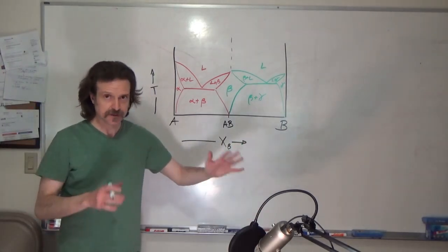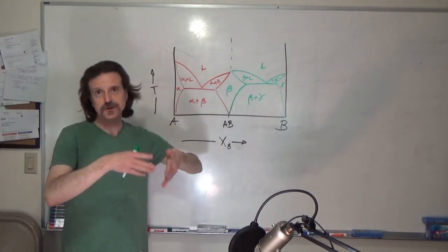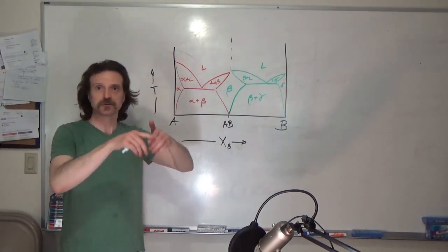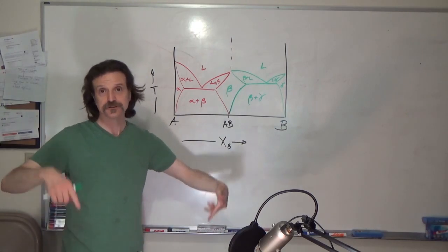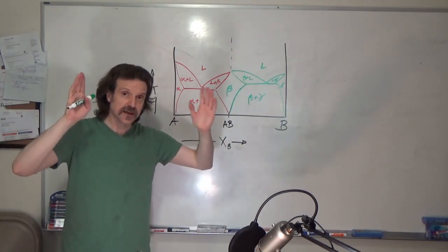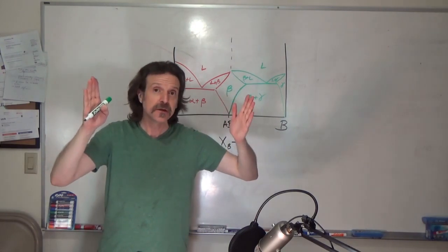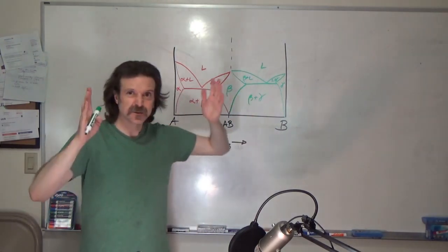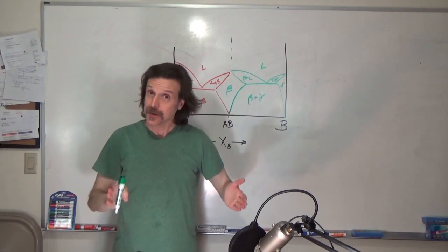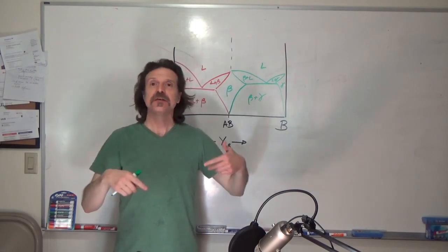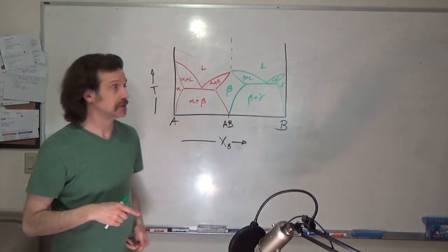The same rules for reading the diagram apply. You determine if you're in a single-phase or two-phase region. If you're in a two-phase region, you draw a tie line and drop the verticals — those points where they intersect the phase boundaries tell you about the solid solubility or liquid solubility and the compositions of the two phases. Then you use the inverse lever rule to determine the phase fraction.